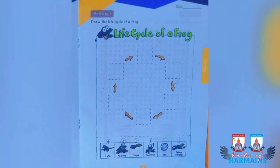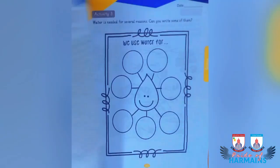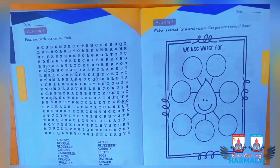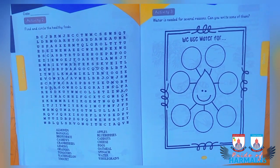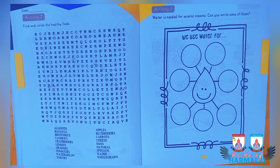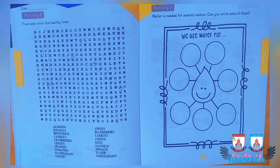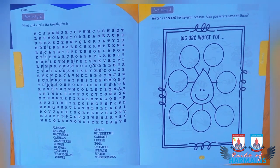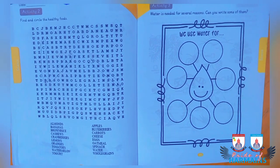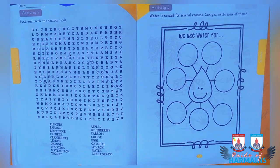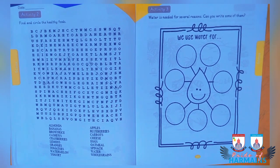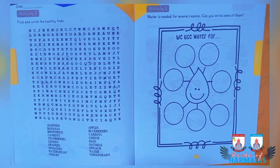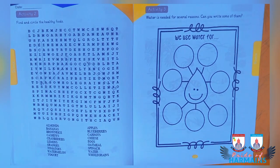Now we are moving to the next activity, which is about finding and circling healthy foods. Healthy food is food that maintains or improves overall health, providing the body with essential nutrients, fluids, protein, vitamins, and energy. For your ease, a list of healthy foods is given below and you have to find those foods in the given puzzle and color them.